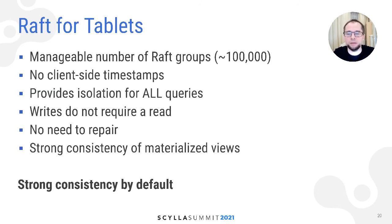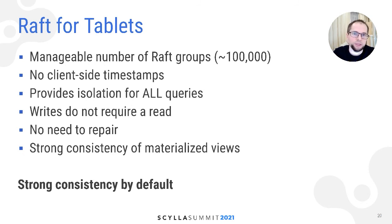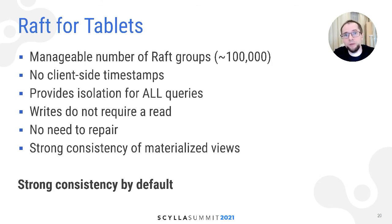Another good thing about tablets is that even in a very large cluster, there can be a manageable number of them — 100,000 tablets is about 64 terabytes of data — meaning we can have a reasonable number of Raft groups. Every tablet will have its own Raft log. If a Raft log is used for reads and writes, we cannot accept client-side timestamps because there is a single linearizable order for all writes to the table. We provide consistency for all queries. Writes do not require a read like with LWT. There is no need for repair because Raft automatically repairs itself. Consistent materialized views — very hard to achieve with eventually consistent writes to the base table — will also be solved with Raft and tablets.